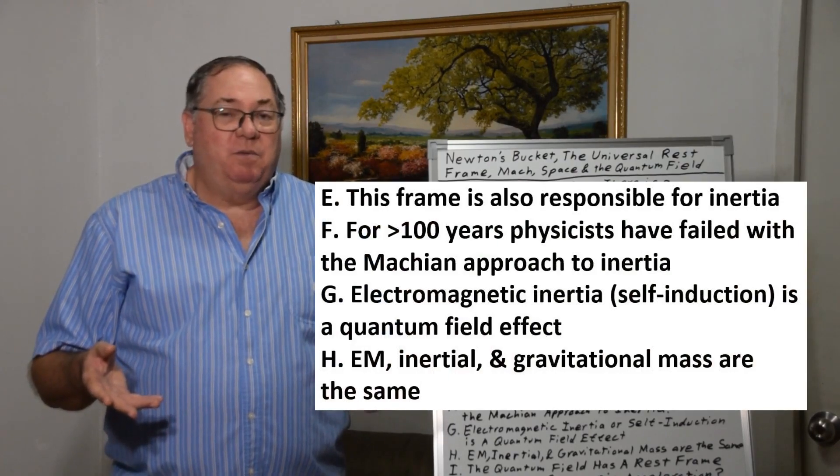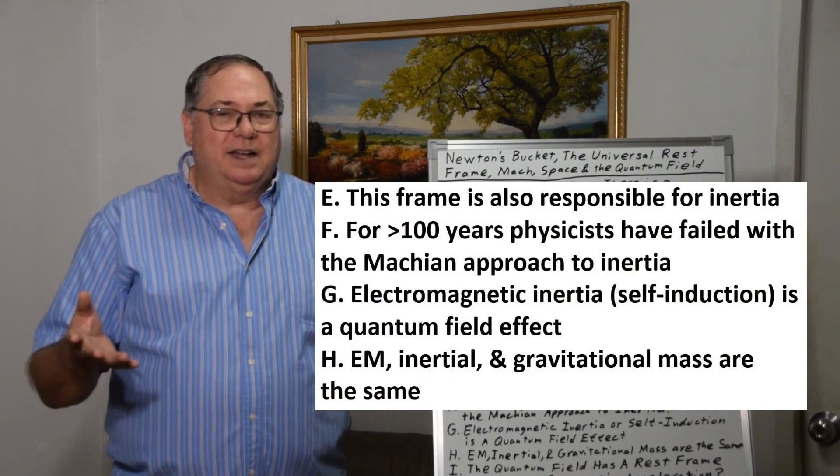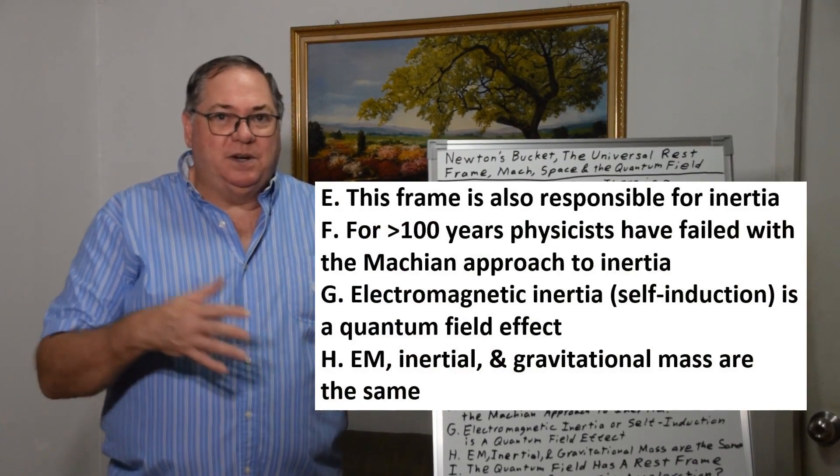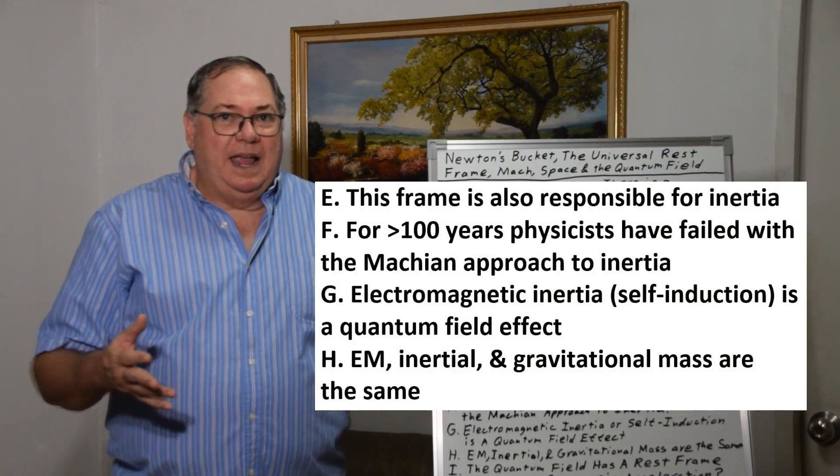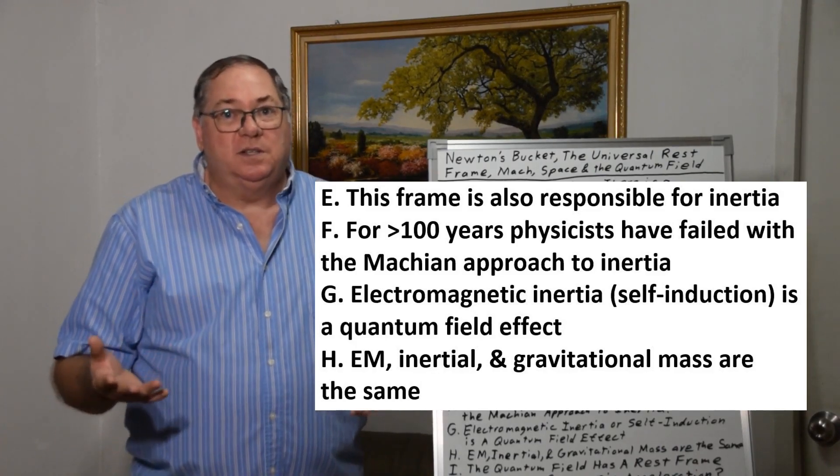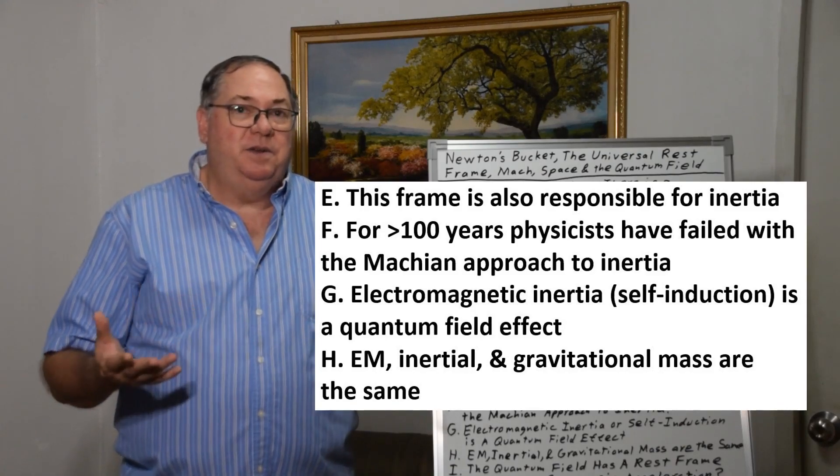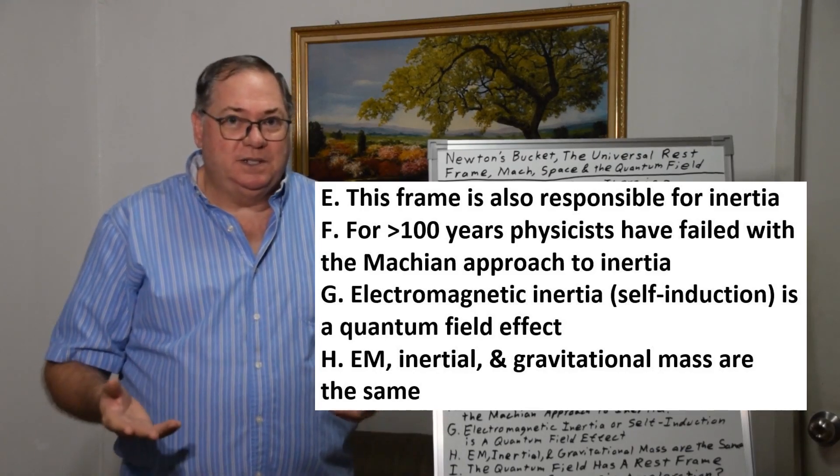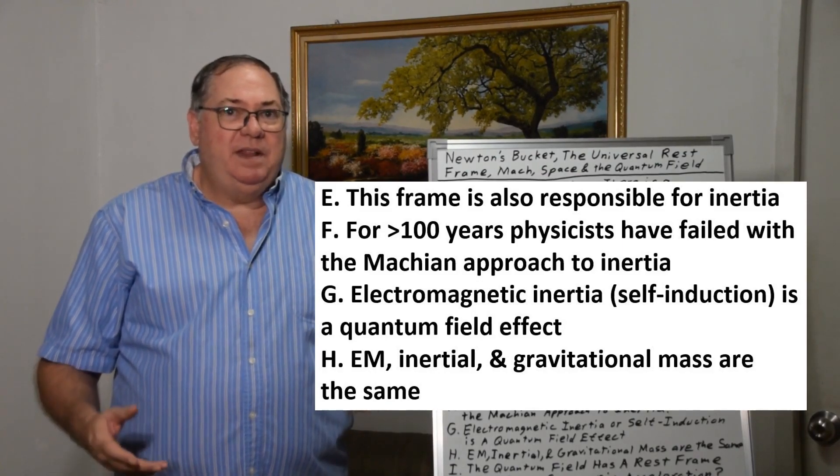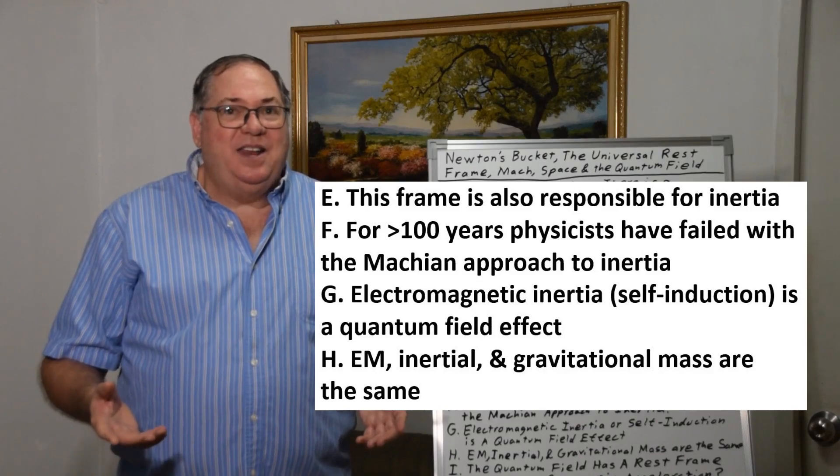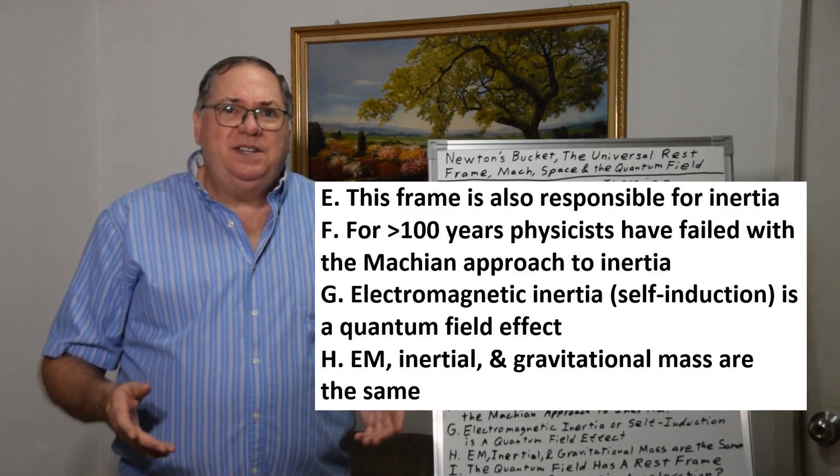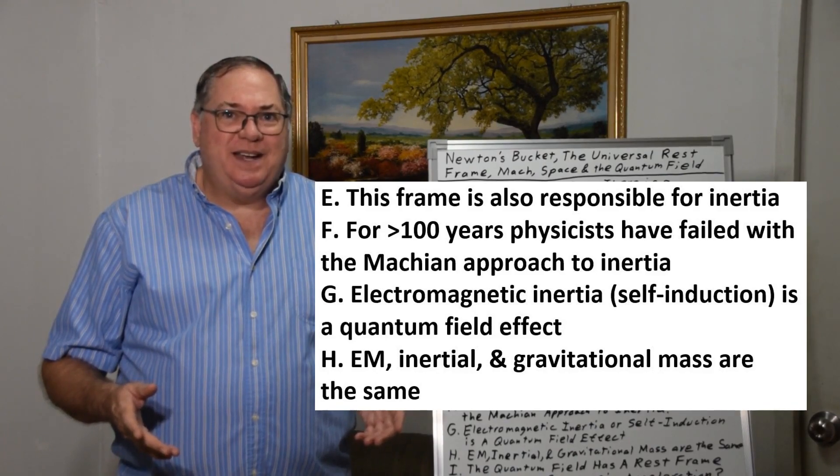Einstein tried to say, well, we'll go with the Machian effect, which is in line with gravity being caused by all the stars and planets. And so he thought that inertia was also caused by stars and planets. And that the Newton bucket effect was caused by all the stars and planets. The problem with that is they've been believing that 100 years. And no one has ever solved the inertia problem. Did I mention that this has to be tied to inertia too?